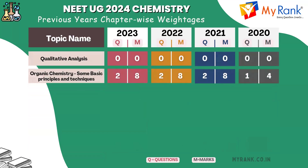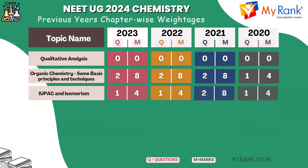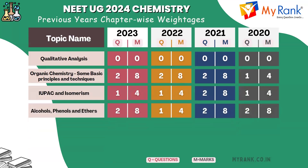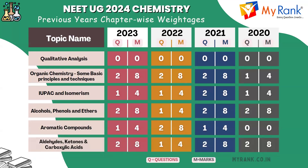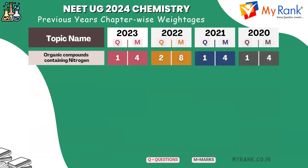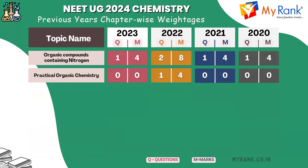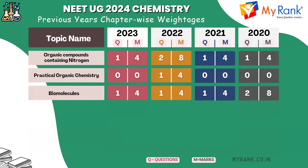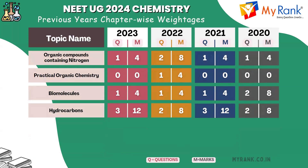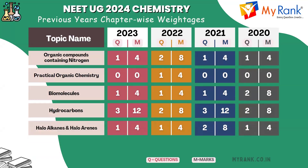Further topics include: Qualitative Analysis, Organic Chemistry — Some Basic Principles and Techniques, IUPAC and Isomerism, Alcohols, Phenols and Ethers, Aromatic Compounds, Aldehydes, Ketones and Carboxylic Acids, Organic Compounds Containing Nitrogen, Practical Organic Chemistry, Biomolecules, and Hydrocarbons — Alkanes, Alkenes and Alkynes.